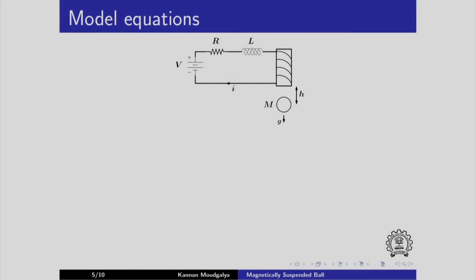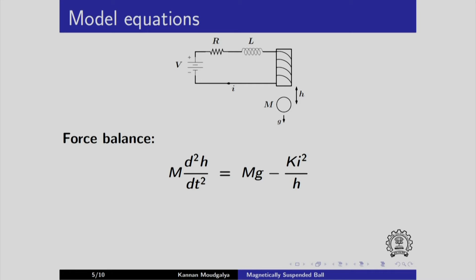Let us see some model equations. First, we will consider the force balance. This is the net acceleration, d squared h by dt squared, so m times that is the net force. The gravitational force is acting downwards — it is mg — and the magnetic force is acting upwards. It is inversely proportional to h and proportional to the square of the current. Next, we will consider the voltage balance. Here is the voltage that is applied, this is the voltage across the inductor, and this is the voltage across the resistor.